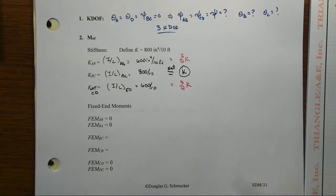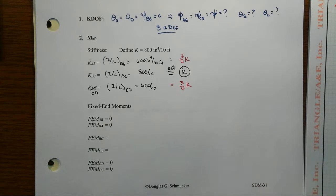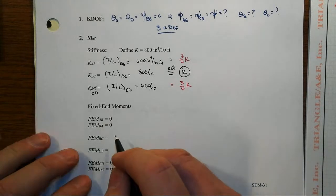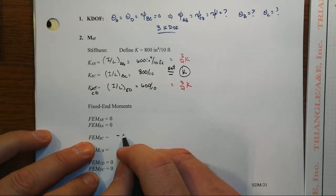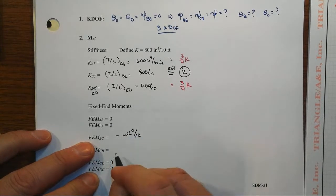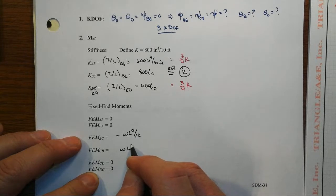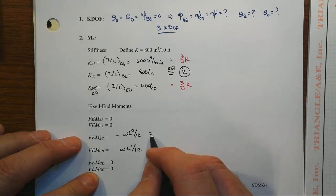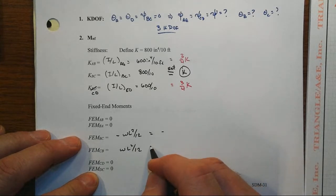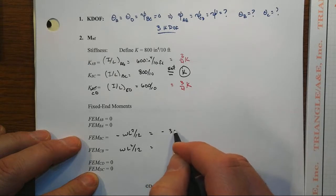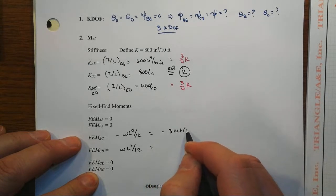That's the distributed load, so the other two don't have fixed-end moments. We'll get the sway load, the 10 kips applied to joint C, into this later. So the fixed-end moment BC will be minus WL squared over 12, whereas CB will be positive WL squared over 12. So we get then minus 3 kips per foot times 10 feet squared over 12.